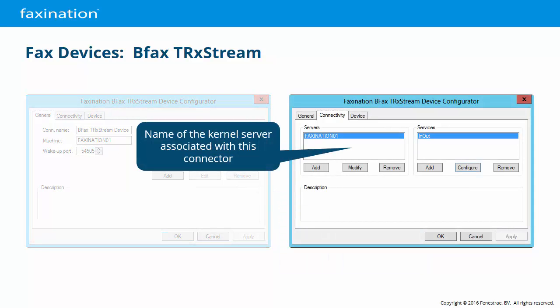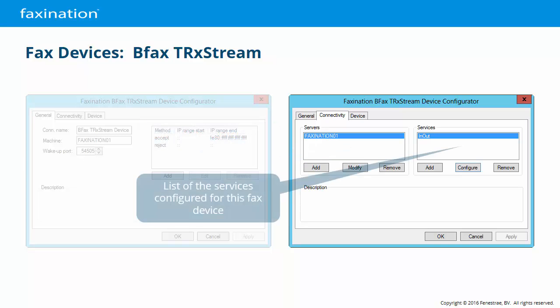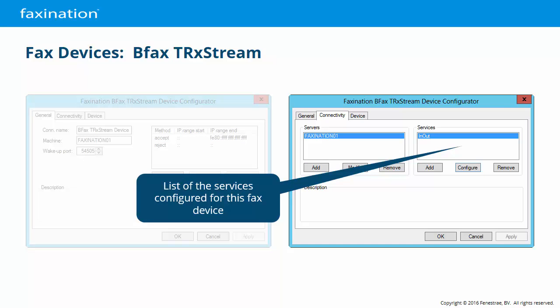On the Connectivity tab, the left pane identifies the kernel server that this device connector will communicate with. The configurator suggests that multiple kernels can be defined here, but really only one is allowed. The right pane allows you to configure services for this device connector. As we saw earlier, a single fax card can be divided up into multiple services, each with a different configuration and messaging direction. By default, a single in-out service will be created using all of the available channels of the fax device.